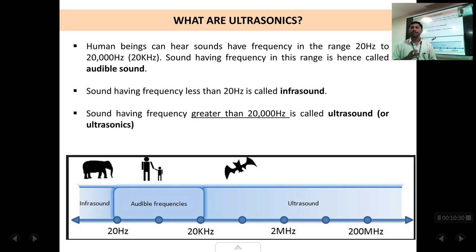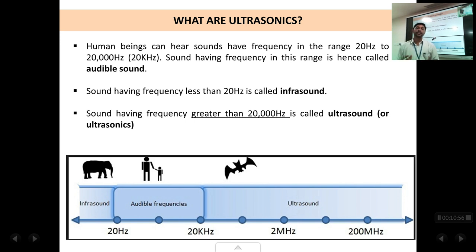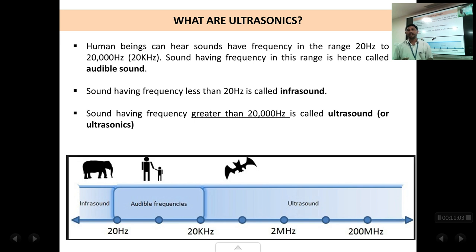Although we human beings cannot hear ultrasonic sounds, there are some animals like bats and even dogs that can hear them. Bats, for example, use ultrasonic sound for their navigation. They send out a beam of ultrasonic sound, and if there is an obstacle in their path the sound gets reflected back. Based on that reflection, they can make out whether there is some object ahead. So even in darkness, bats can fly through dark caves very easily by sending out ultrasonic sound waves and hearing the reflections from obstacles in their path.